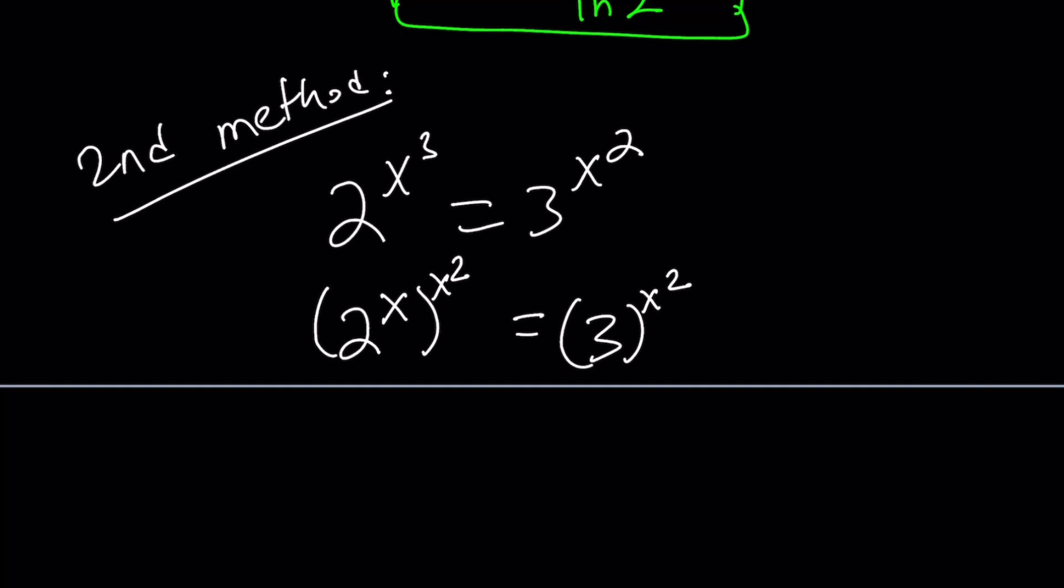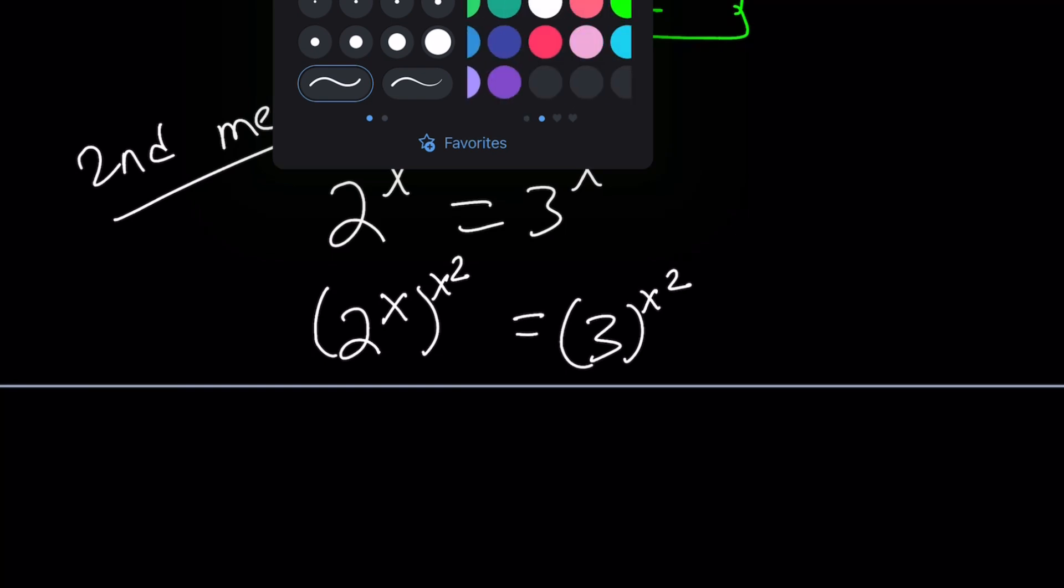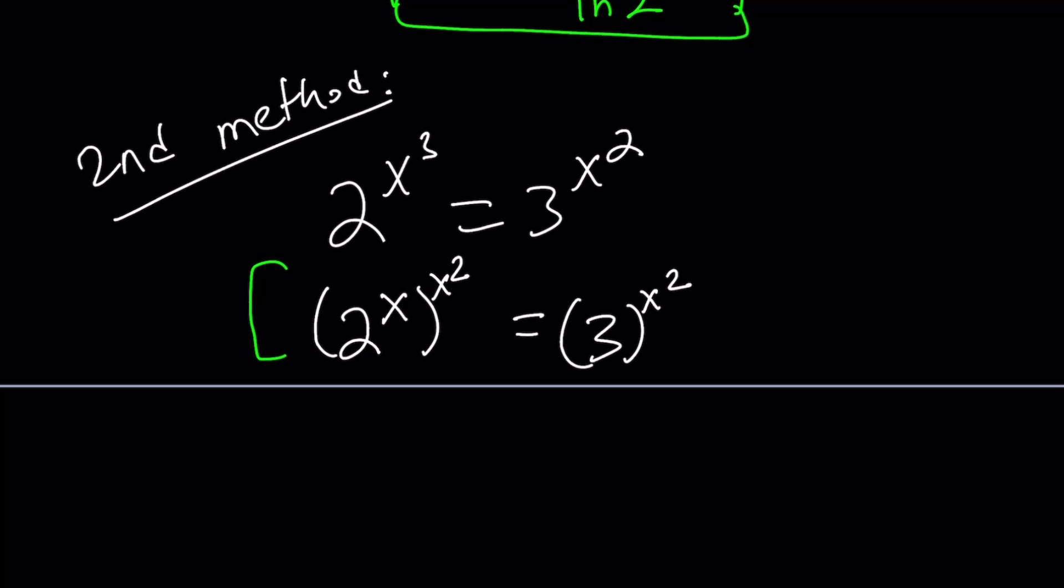Now, we can raise both sides to the power 1 over x squared, since x does not equal 0, or we should say, as long as x does not equal 0. But probably before that, let me do the following.